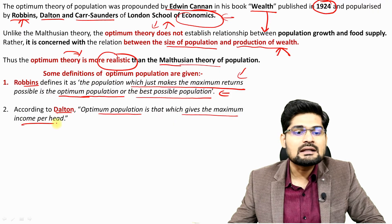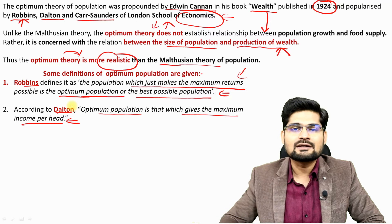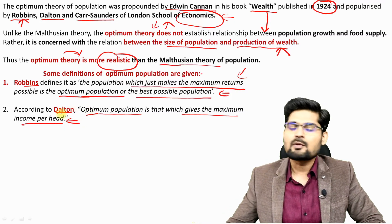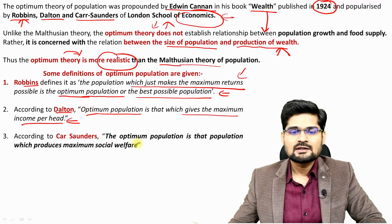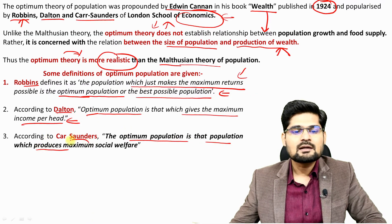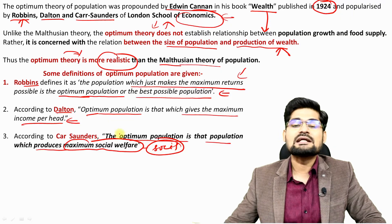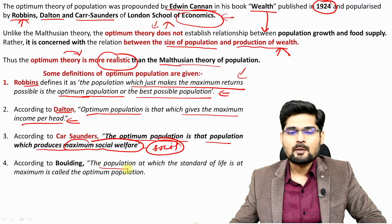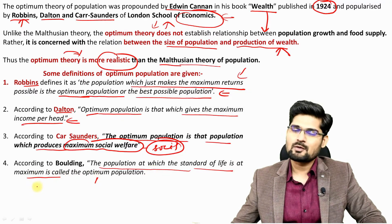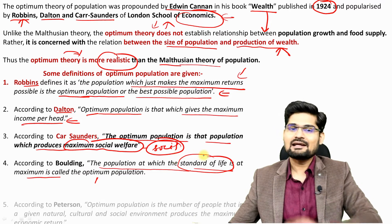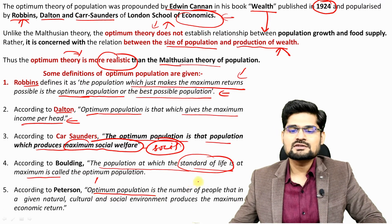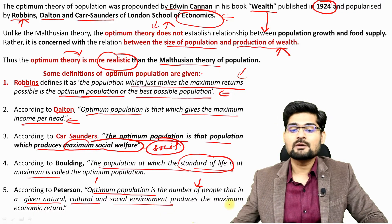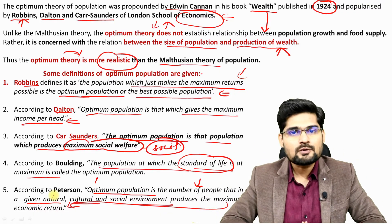Dalton's definition states that optimum population is that which gives maximum income per head — that is, maximum per capita income. Carr-Saunders defined it as the population that produces maximum social welfare, integrating the social with the economic concept. Building's definition refers to the population at which the standard of life is at maximum. Peterson's definition is broader: the number of people that, in a given natural, cultural, and social environment, produces maximum economic returns.